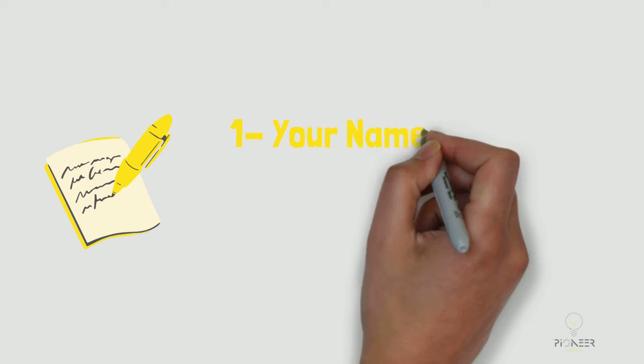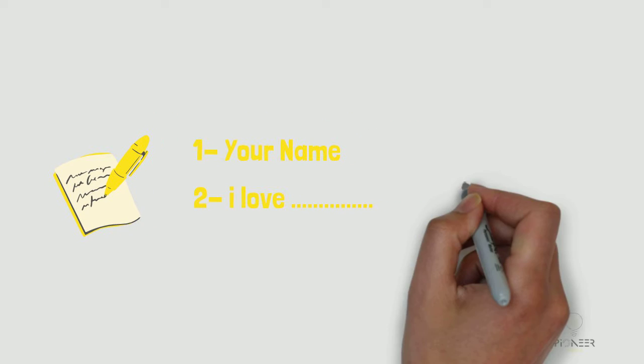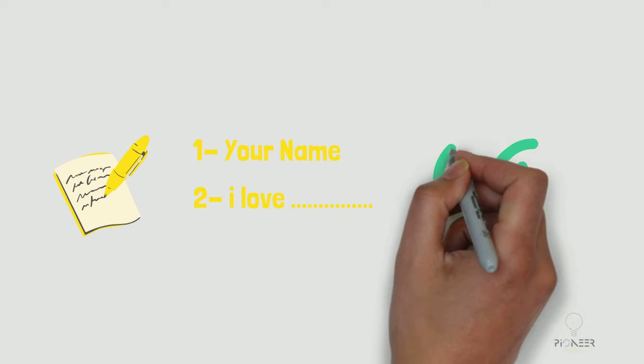Number one: your name. Number two: things you love, like, or are passionate about. Done, now we can get into it. How your name can make you money.